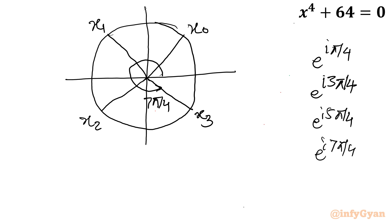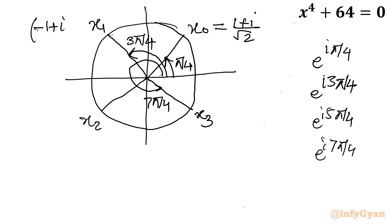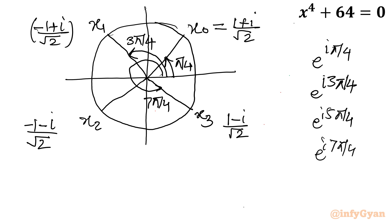You can check: 7π/4 is in the fourth quadrant, 3π/4 is in the second quadrant, and 5π/4 is in the third quadrant. In the first quadrant we get (1 + i)/√2; in the second quadrant (−1 + i)/√2; in the third quadrant (−1 − i)/√2; and in the fourth quadrant (1 − i)/√2. Once you calculate x₀ you can find all remaining x₁, x₂, x₃.